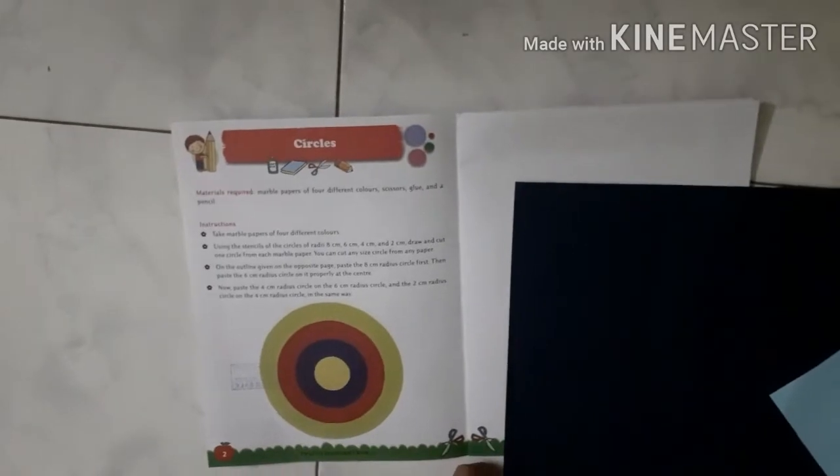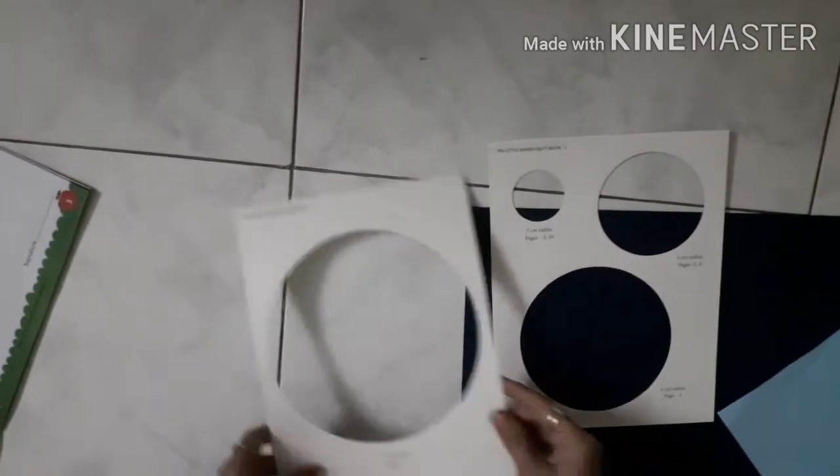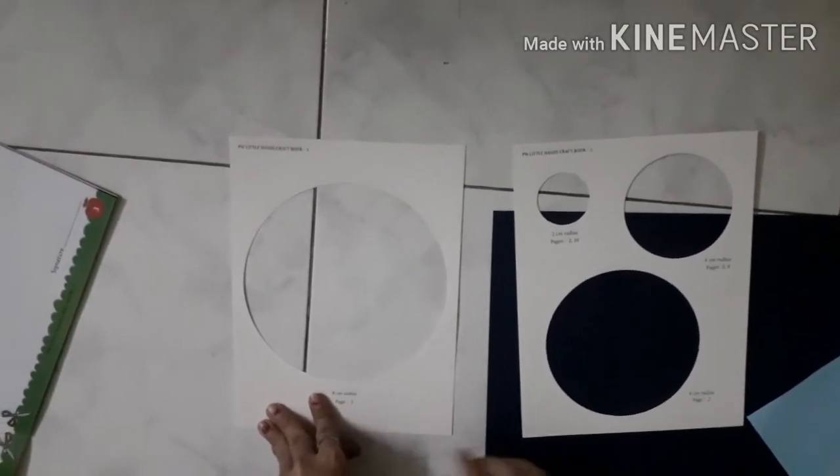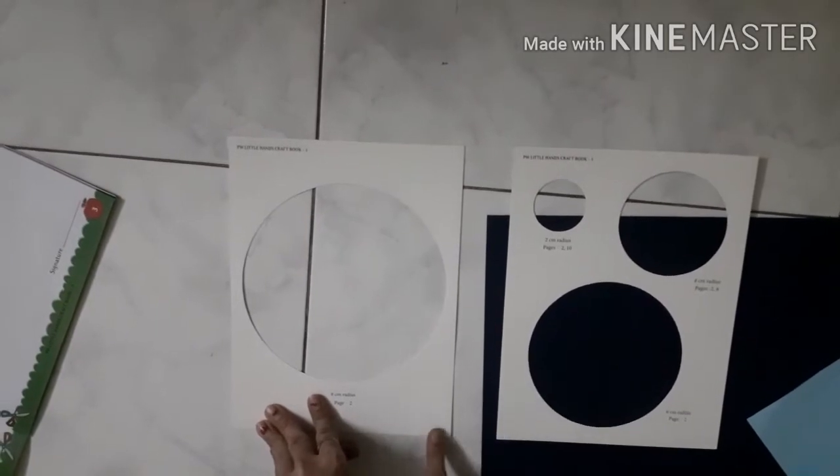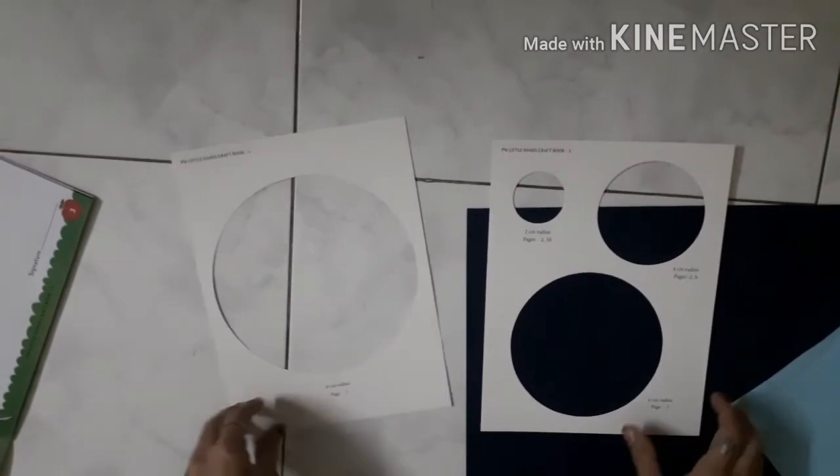These are stencils for making circles. You have been given an outline which you can use to draw circles, and after that you need to cut them out.